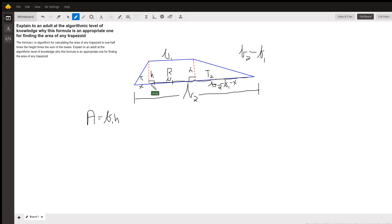So the area of triangle 1 is one-half the base times the height. I'll put the height first. Plus the area of triangle 2 is one-half the height times this B sub 2 minus B sub 1 minus X.